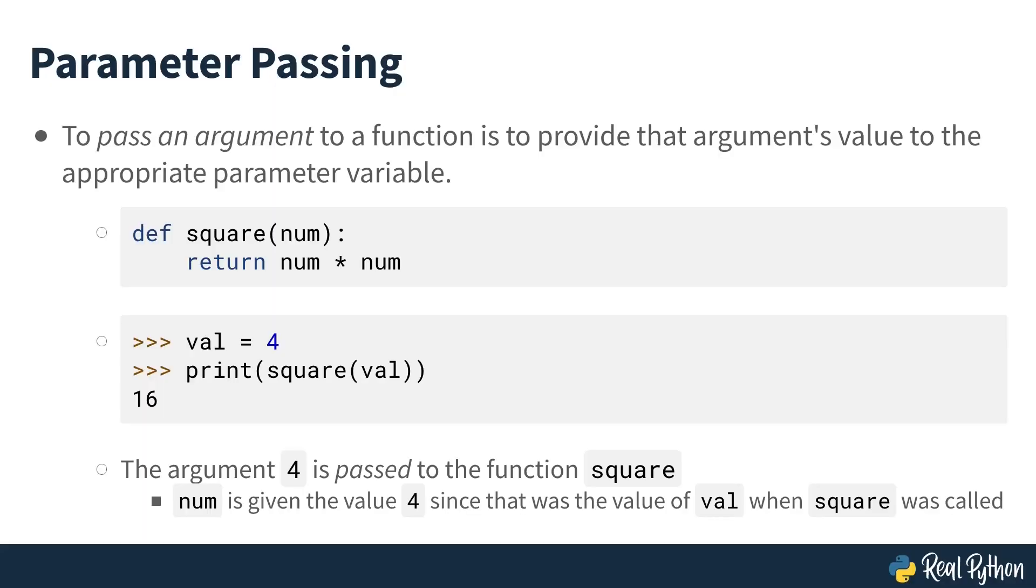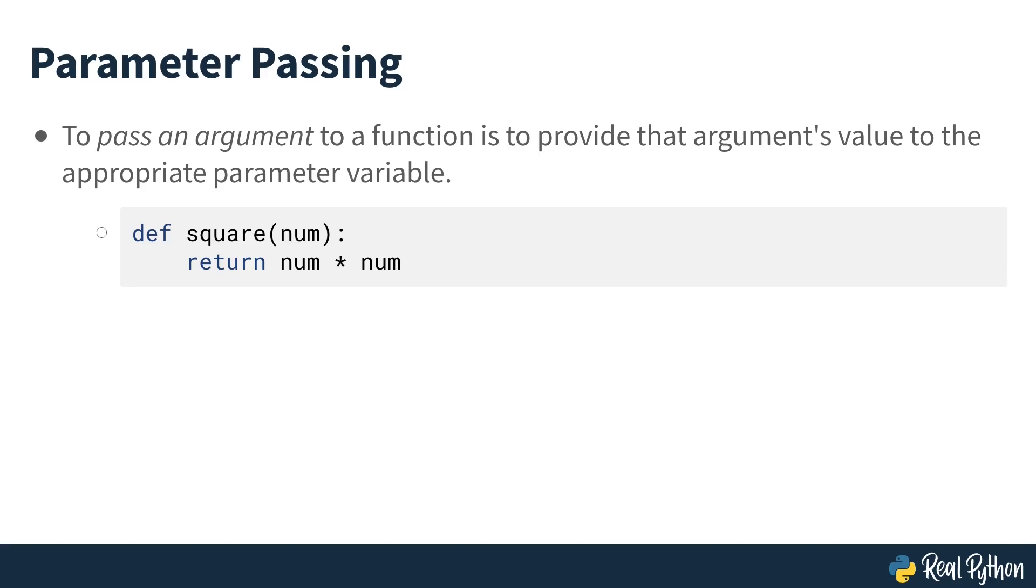What's happening? The value four is being provided as an argument to the function square. When the function is called, the parameter variable num is given the value of four and then used in the rest of the function. Let's look at the function definition again. This might seem silly to even mention, but we'd never even consider changing the value of num once the function begins executing. It contains the number we want to square. We don't need to change num to something else.